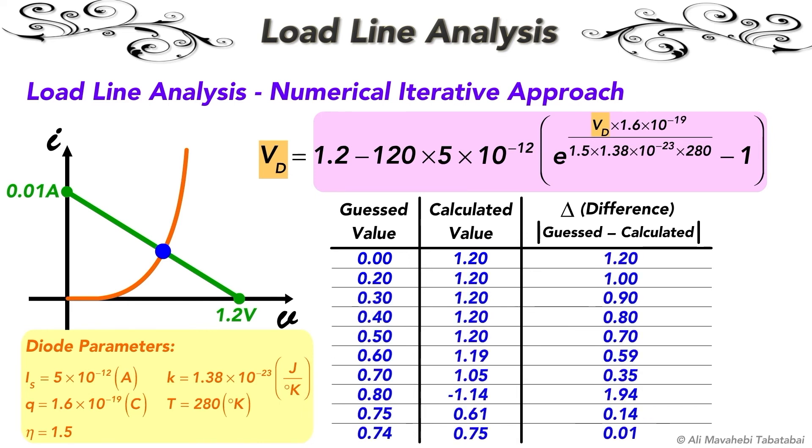I repeat this with different values, that's why it is called iterative method. The value at which the number on the first column is the closest to the number on the second column, or the value at which the error or the number on the third column is the smallest value, is the best approximation for VD or the diode voltage.